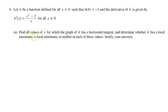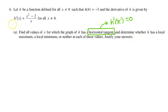Part A: find all values of x for which the graph of h has a horizontal tangent, and determine whether h has a local maximum, a local minimum, or neither at each of these values. Justify your answer. As soon as you see the phrase horizontal tangent, you should be thinking that means h prime is going to equal 0. So let's find the values where h prime is equal to 0.